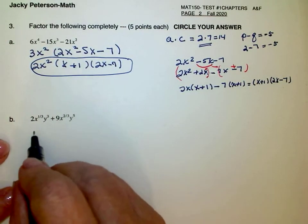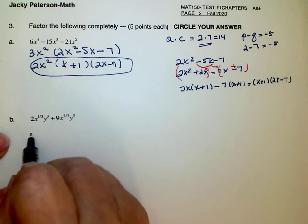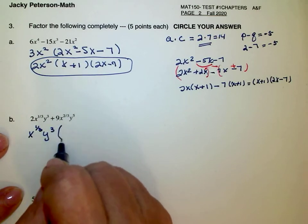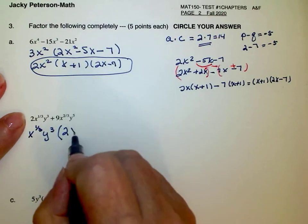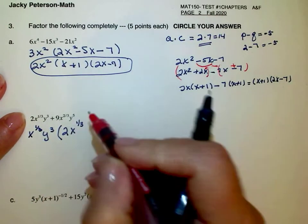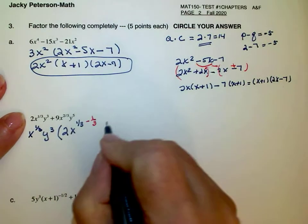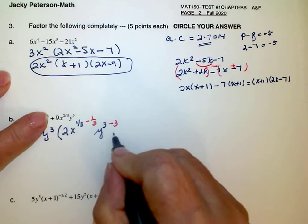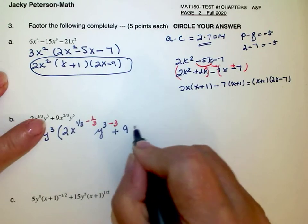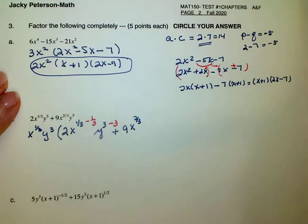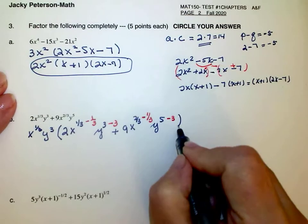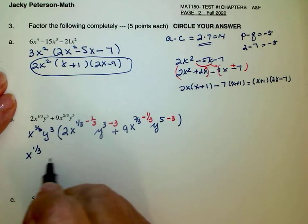On this one the greatest common factor is smallest power on x is one-third, smallest power on y is y cubed. So from the x to the one-third I'm removing one-third, and from the x to the two-thirds I'm removing one-third, and from the y to the fifth I'm removing three. So this says x to the one-third y cubed.